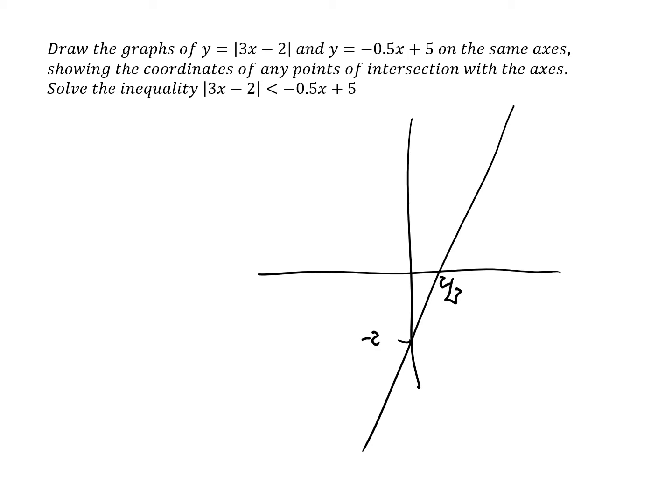So the graph would look the same unchanged when y is already positive, but then reflected up like this. So this would be 2 here.